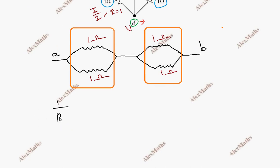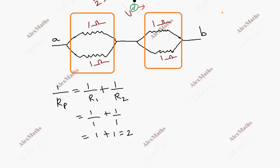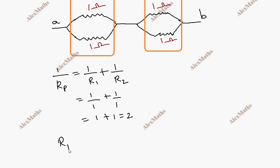1 by R_P equals 1 by R1 plus 1 by R2. So it is 1 by 1 plus 1 by 1, total of 1 plus 1, which is 2. So the reciprocal of R_P equals 2, giving R_P equal to half ohm.